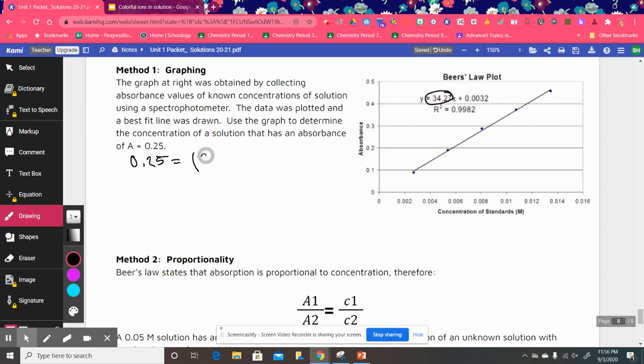which is really a times b. So that was the 34, so this right here is the slope. I'm going to plug that in, so 34.27 times the concentration, which is our unknown, plus 0.0032.